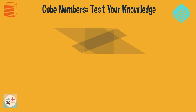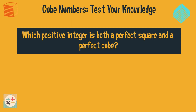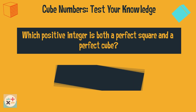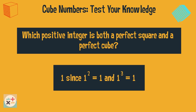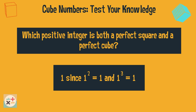Question 9. Which positive integer is both a perfect square and a perfect cube? 1, since 1 squared equals 1 and 1 cubed also equals 1. That's all for today — don't forget to check out our other test your knowledge videos to practice your math skills.